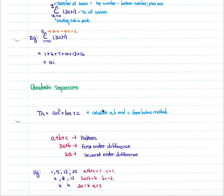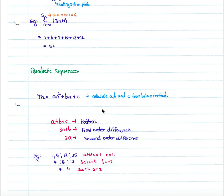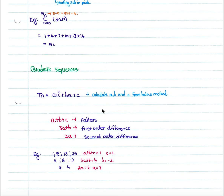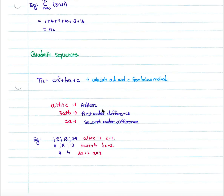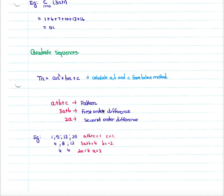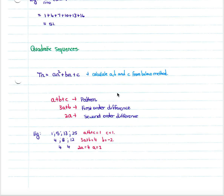Quadratic sequences are the most common form of sequences you will deal with — and in many ways the hardest — but you shouldn't find too many problems with them. The general formula is: tn equals an squared plus bn plus c. Note that in this case, a is not your first term, unlike arithmetic and geometric sequences where a is the first term.